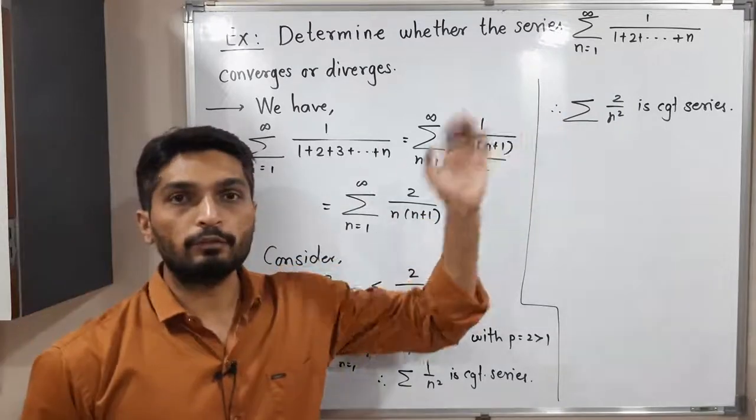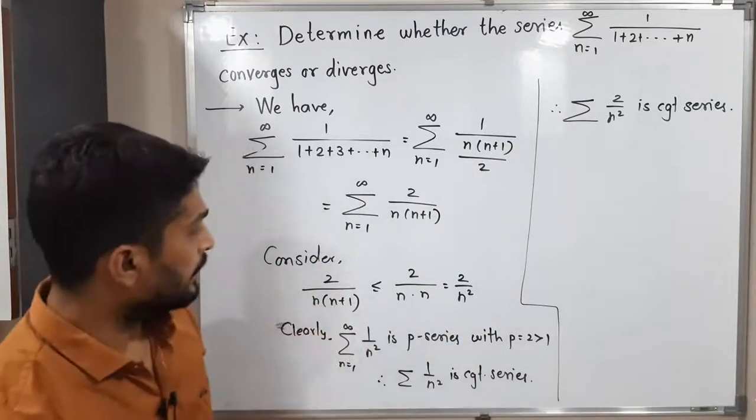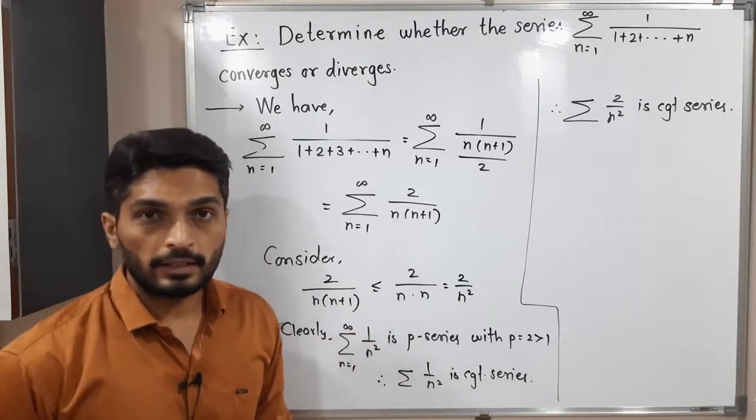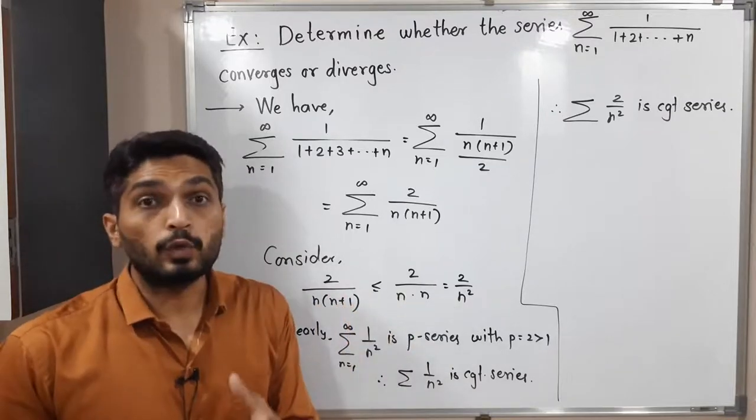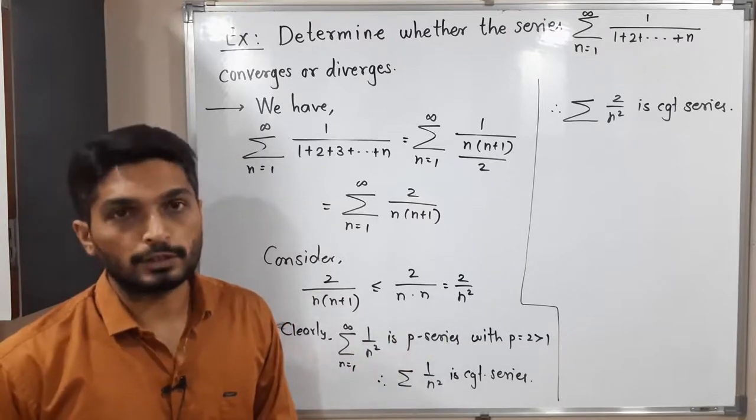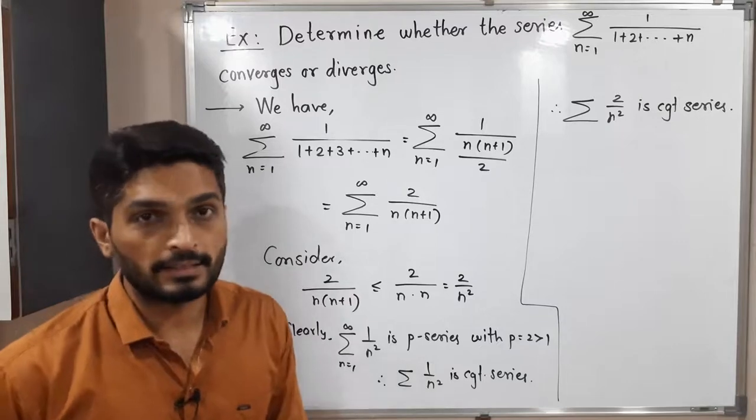We have this type of relation—this is the lower part, this is the upper part. Both are series of non-negative terms. If the upper series is convergent, the lower series is also convergent. Using comparison test...